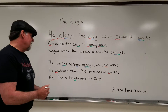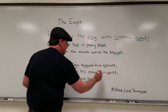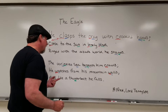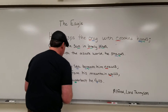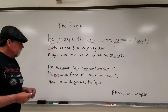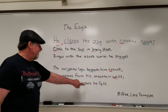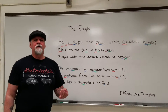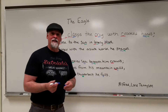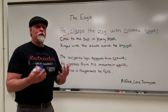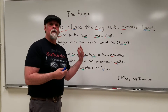'Watches from his mountain walls' — we have the A again in 'watches' and A in 'walls.' 'And like a thunderbolt he falls.' I also note that the L here, and these Ls, is almost a combination of alliteration and consonance — a repetition of a sound that the ear will pick up. It's those devices that give this short poem so much music.